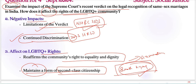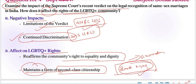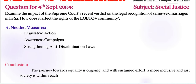Coming to needed measures: legislative action is very important. Parliament should take up the issue of same-sex marriage and pass legislation that provides equal rights to LGBTQ+ couples. This would align India's legal framework with international human rights standards, as outlined in the Yogyakarta Principles.